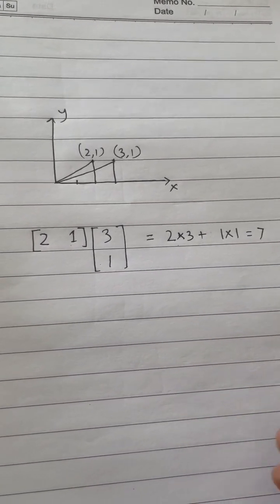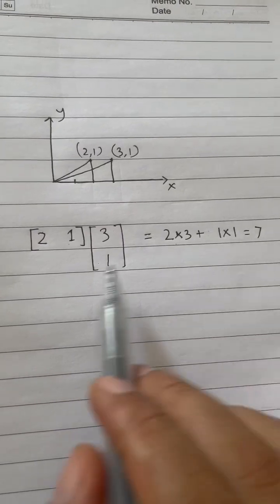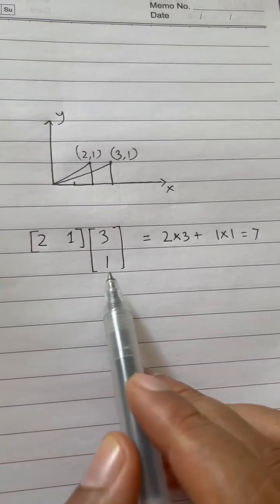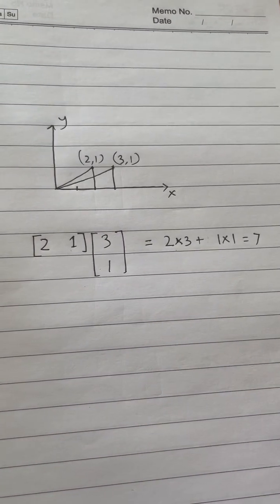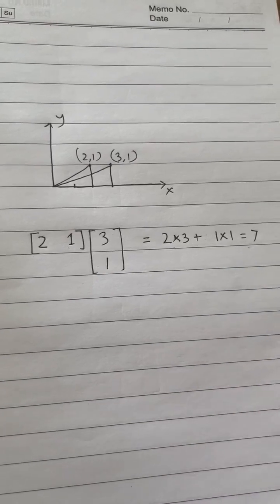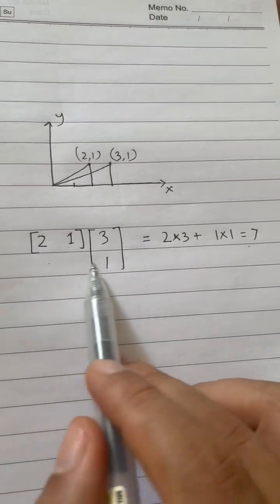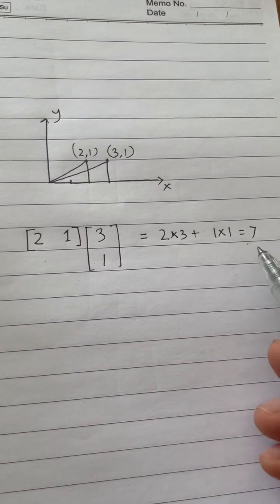Now what's the meaning of this 7? The 7 means that between these two vectors there is a relationship of the direction. 7 means it's a positive number, that means they are pointing to the same direction pretty much.